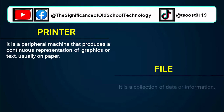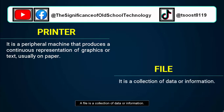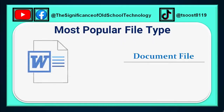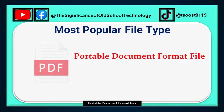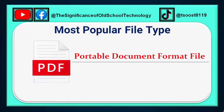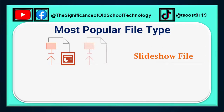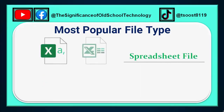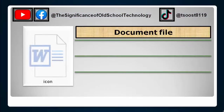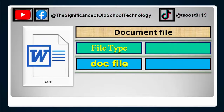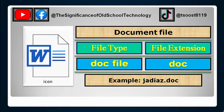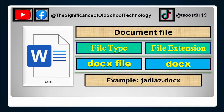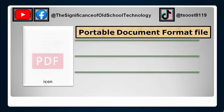Next is the file. A file is a collection of data or information. Some of the most popular files are document files, portable document format files, slideshow files, and spreadsheet files.